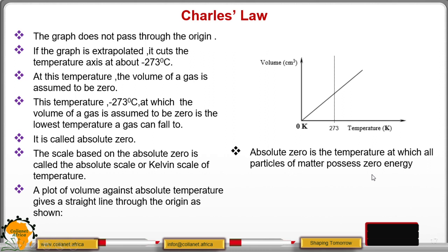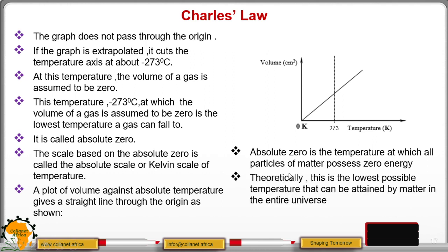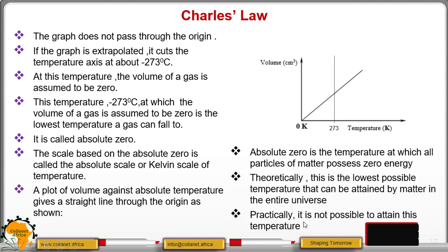At this particular temperature, matter possesses zero energy. This is theoretical because it is not possible for matter to have zero energy or zero volume. Theoretically, it is the lowest possible temperature that can be attained by matter in the entire universe, but practically it is not possible to attain this temperature. That is why we say the ideal gas is the only one that obeys gas laws.